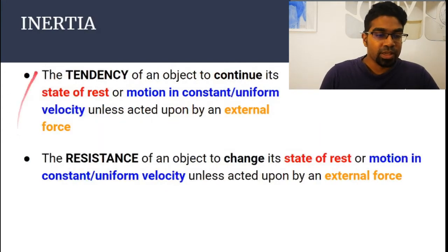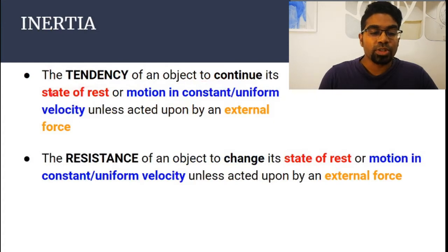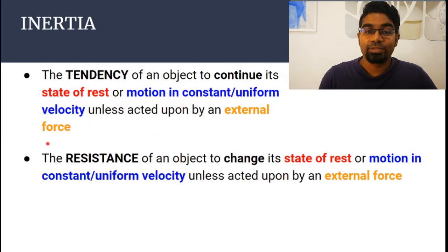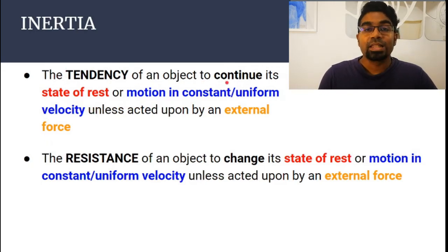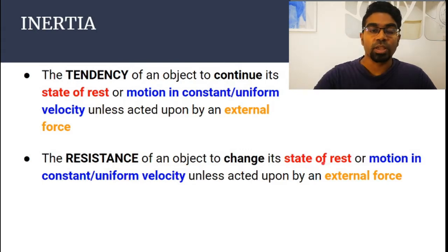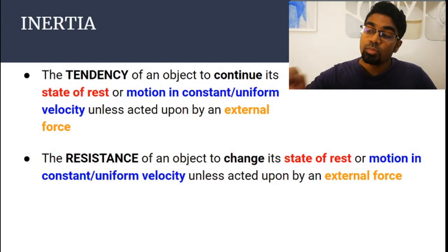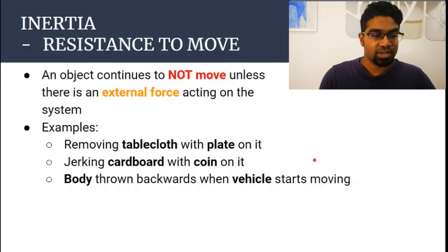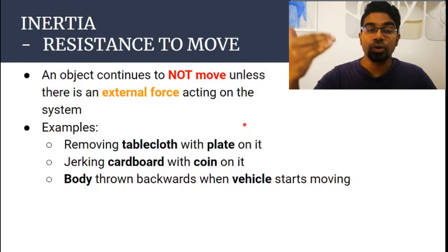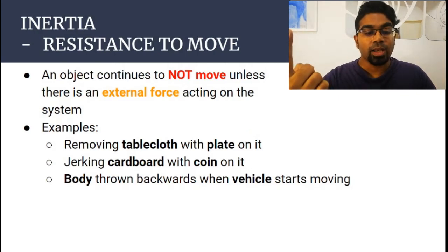Inertia is essentially the same thing — the tendency of an object to continue its state of rest or motion in constant or uniform velocity unless acted upon by an external force. There are two ways to put it: one is the tendency to continue its state of motion, and the other is the resistance to change the state of motion. If it is at rest it will not want to start moving; if it is already moving at constant velocity it will not want to stop.